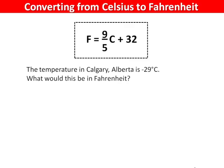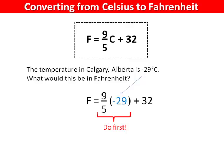Here is an example. The temperature in Calgary, Alberta is minus 29 degrees Celsius. What would this be in Fahrenheit? Substitute the negative 29 into the C in our formula. According to order of operations, we have to take care of the multiplication and division before we do the add 32. 9 divided by 5 multiplied by negative 29 is negative 52.2. Now add negative 52.2 and 32 to get negative 20.2 degrees Fahrenheit.